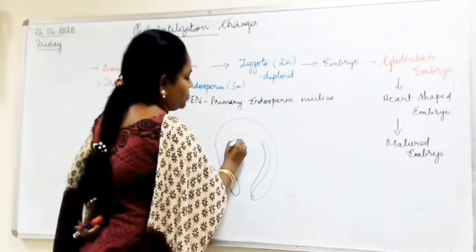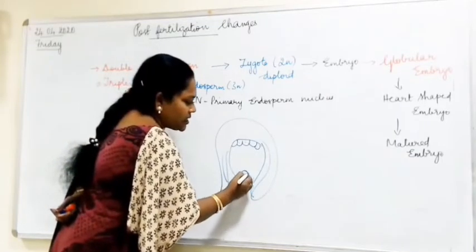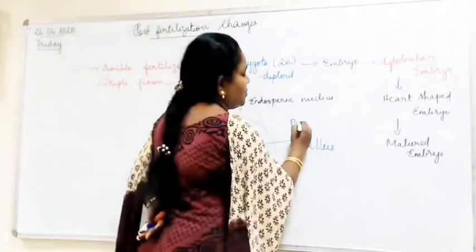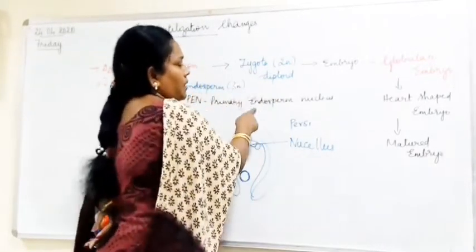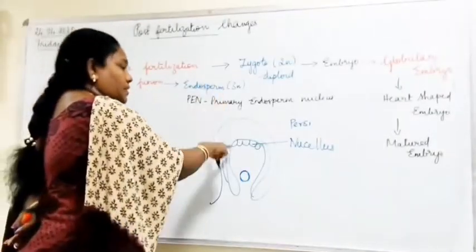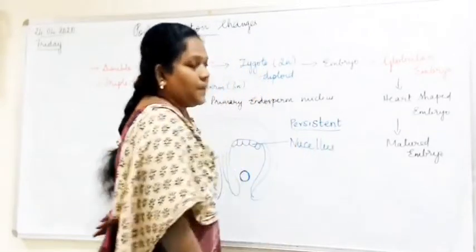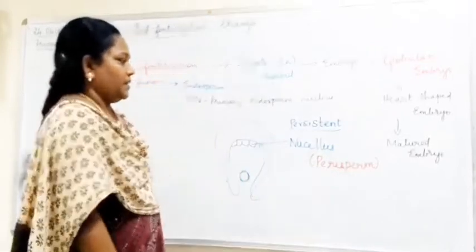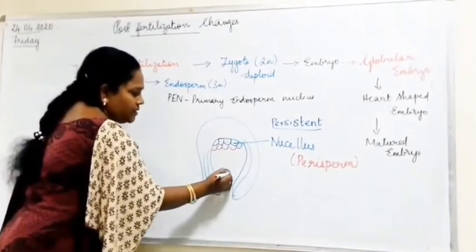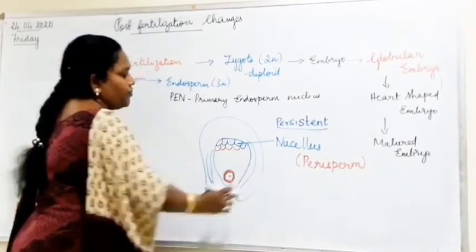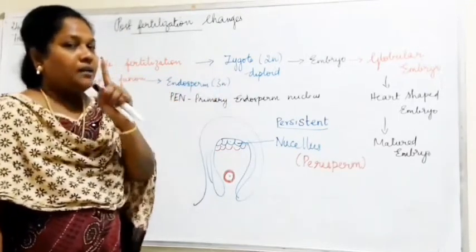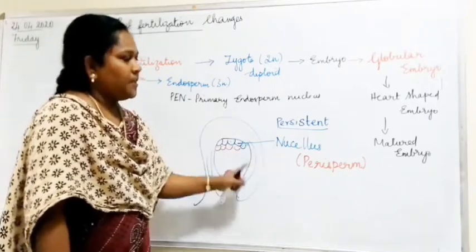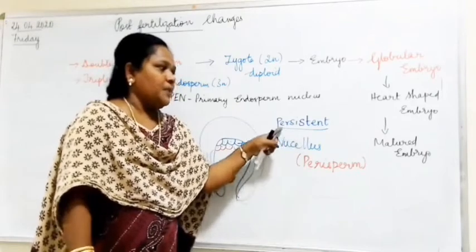Similarly, in the ovule, there is the nucellus. From the nucellus, only one functional megaspore is produced through meiotic division, forming a megaspore tetrad. The other three degenerate and one remains as the functional megaspore, which develops into the female gametophyte or embryo sac. The remaining nucellus cells, if they persist even after all development has taken place, are called persistent nucellus, and the term given to this persistent nucellus is perisperm.